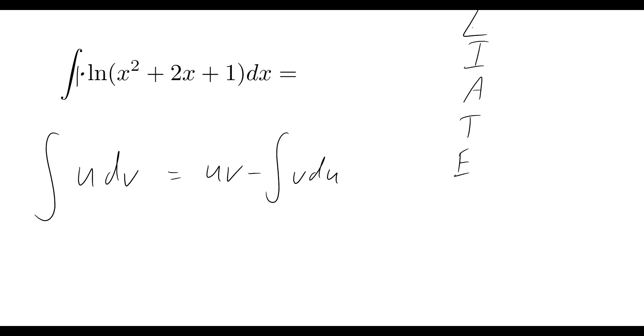So u, according to our LIATE, must be the logarithm term. So let's get that down. So u is going to be equal to the natural log of x squared plus 2x plus 1. And now differentiating that for du, well, what's the derivative of the inside function? That would be 2x plus 2, and then just over that function inside the natural log there. So over x squared plus 2x plus 1. Fantastic. So we've got our u and our du.